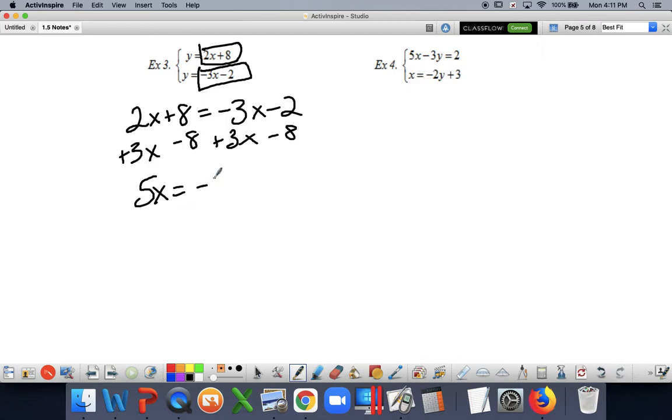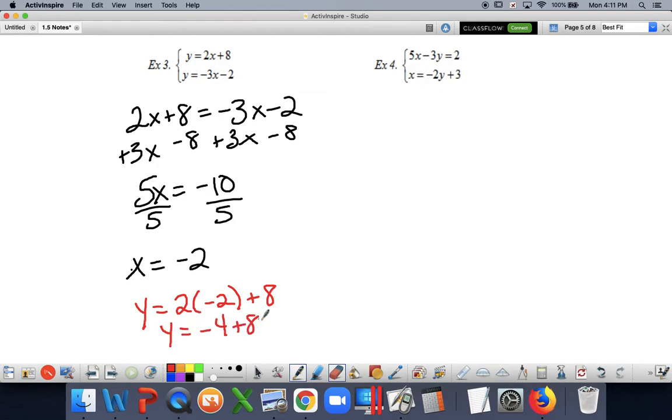Remember, if I'm going too fast, simply pause the video and work out the problem yourself and then catch up. I get x is equal to negative 2. Now I've got to plug that back in to one of my original equations. It doesn't really matter which one. Let's do the first one. 2 times negative 2 plus 8. I get that my solution is the coordinate point negative 2, 4, consistent and independent.